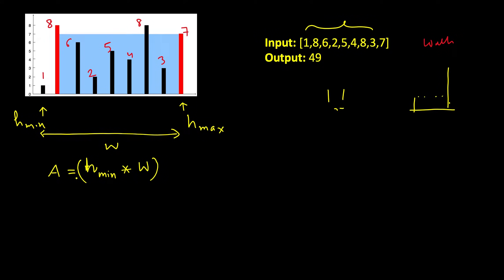This may not be the maximum area because there may be bars at smaller widths that are very tall, giving a larger overall area. If you decrease the width but keep the same minimum height, you get a smaller area. The only way to increase area while decreasing width is to find a bar higher than the current minimum.